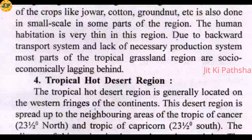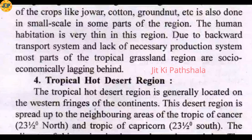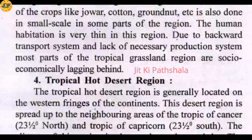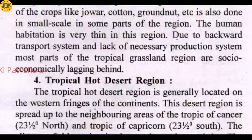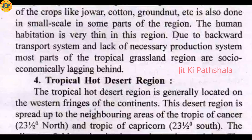The human habitation is very thin in this region — very few people live there. Due to a backward transport system and lack of a necessary production system, most parts of the tropical grassland regions are socio-economically lagging behind. The tropical grassland region has not been able to develop economically and still remains backward.